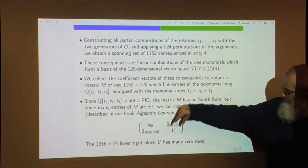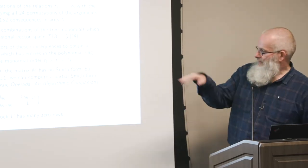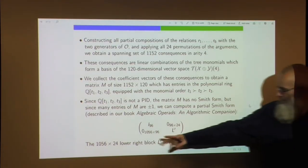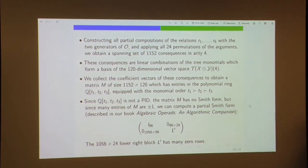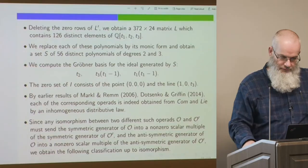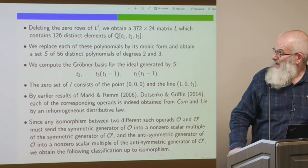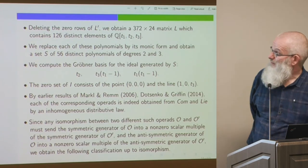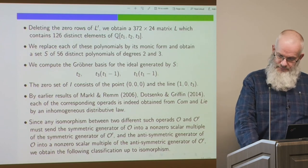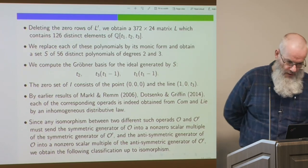96 is significant because if this matrix has rank 96 and 120 columns, it has nullity 24 — exactly the nullity we want. We get a 96×96 identity block, zero matrices, and a lower-right block containing polynomials in three variables. We want that lower-right block to be zero. After deleting zero rows, we obtain a 372 by 24 matrix containing 126 distinct polynomials. We want to find what values of the parameters T_1, T_2, T_3 make that matrix zero.